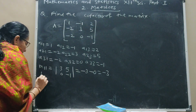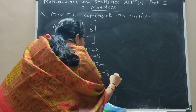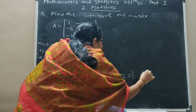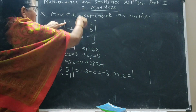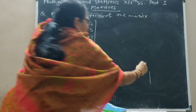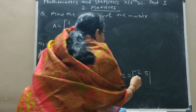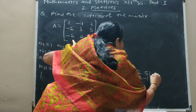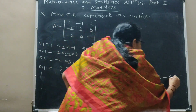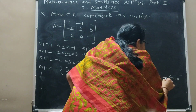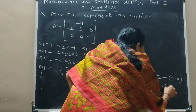Then M12: delete the first row and second column. The remaining elements are 1, 2; minus 2, 5. Solving: (1×5) minus (2×minus 2) = 5 plus 4? Working through: minus 10 minus (minus 10), plus 2, which gives 12. So M12 = 12.